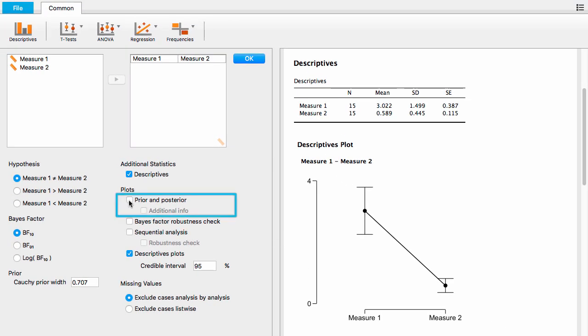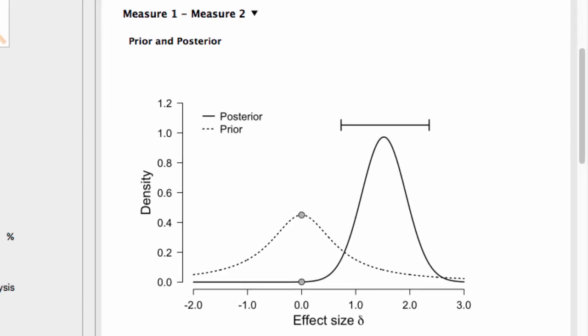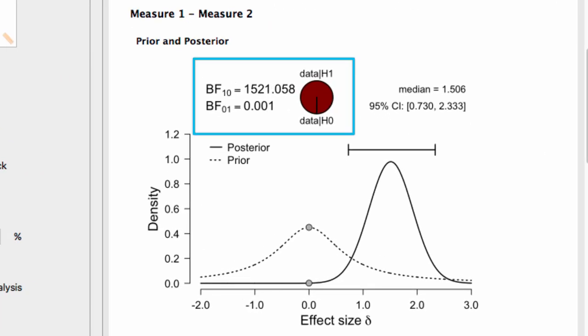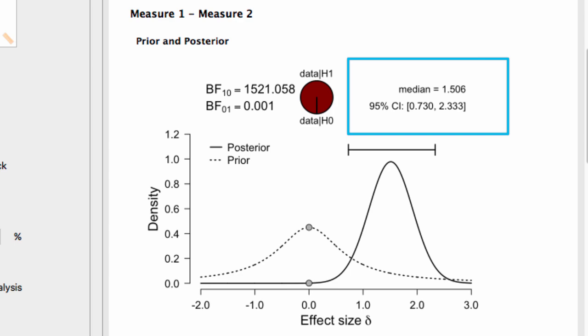Next, let's click the Prior and Posterior Plot option. The prior distribution is shown as the dashed line and the posterior distribution as the solid line. Most of the posterior distribution falls on large positive values of the effect size. Two dots on the plot represent the height of the curves at the null hypothesis of no effect. The dot on the prior distribution is higher than the dot on the posterior, meaning the Bayes factor supports the alternative hypothesis. Clicking Additional Info adds a graphical representation of the Bayes factor and a 95% credible interval for the effect size.